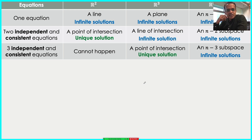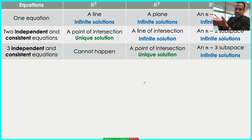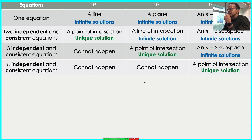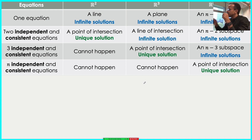Three independent and consistent equations cannot exist in R2 — you run out of dimensions. But in R3, three such equations give three planes: the first two intersect in a line, and the third plane cuts that line at a single point — a unique solution. In Rn with three equations you again get infinitely many solutions because there are not enough constraints. Generalizing, n independent and consistent equations in Rn yield a single point of intersection — a unique solution.